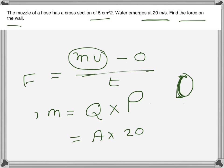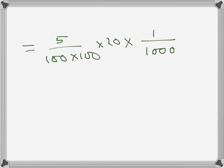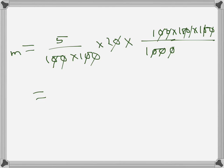Since momentum after hitting the wall becomes zero, the difference gives the change of momentum. The volume times density gives us the mass. The area is 5 cm², which we convert to m² by dividing by 100 × 100. The density of water is 1 gram per cc, which converts to kilograms per meter cubed by dividing by 1000 and multiplying by 100 × 100 × 100.